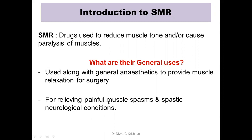You might know about torticollis, the painful neck spasm, or lumbago, the back spasm. During such a spasm the muscle is highly contracted, so you want to decrease the contraction or relax the muscles. SMRs are also used in spastic neurological conditions like upper motor neuron palsy, where muscles are highly contracted. These are the two principal uses of SMRs.